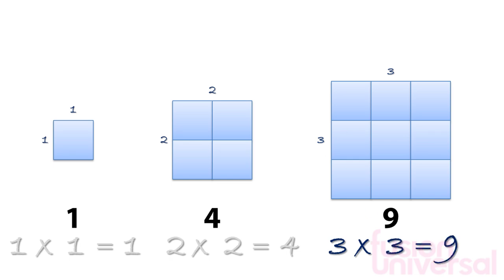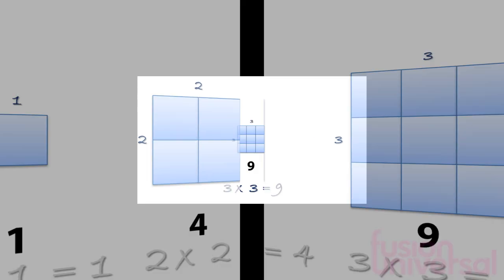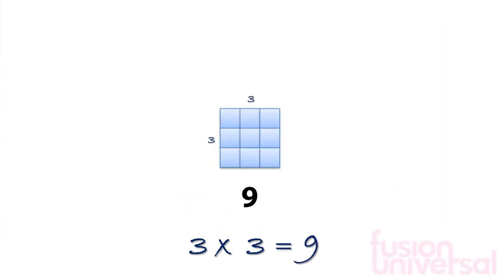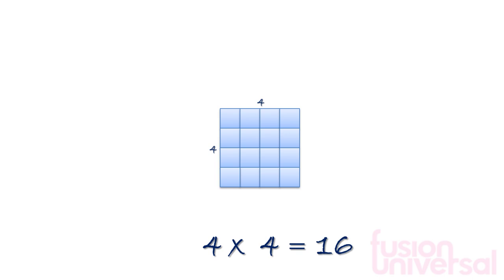Any positive integer multiplied by itself is called a square number. The next shape in our pattern has four rows and four columns. Four times four is sixteen, so sixteen is the next square number.